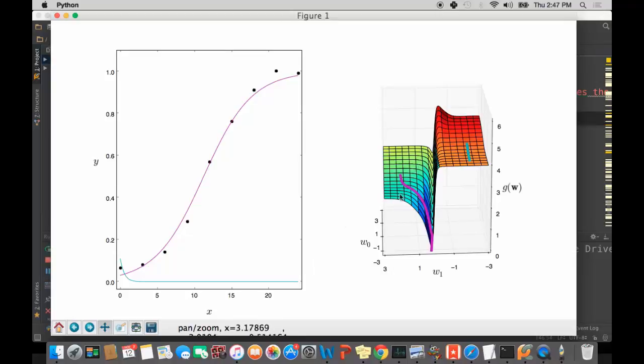Now likewise, if we initialize a little bit better, say here, we take a magenta run of gradient descent, take steps downward, downward, downward, downward, we're going towards a global minimum of the function. The parameters given to us by the final step of gradient descent in this case give us a good fit, shown in magenta over here.